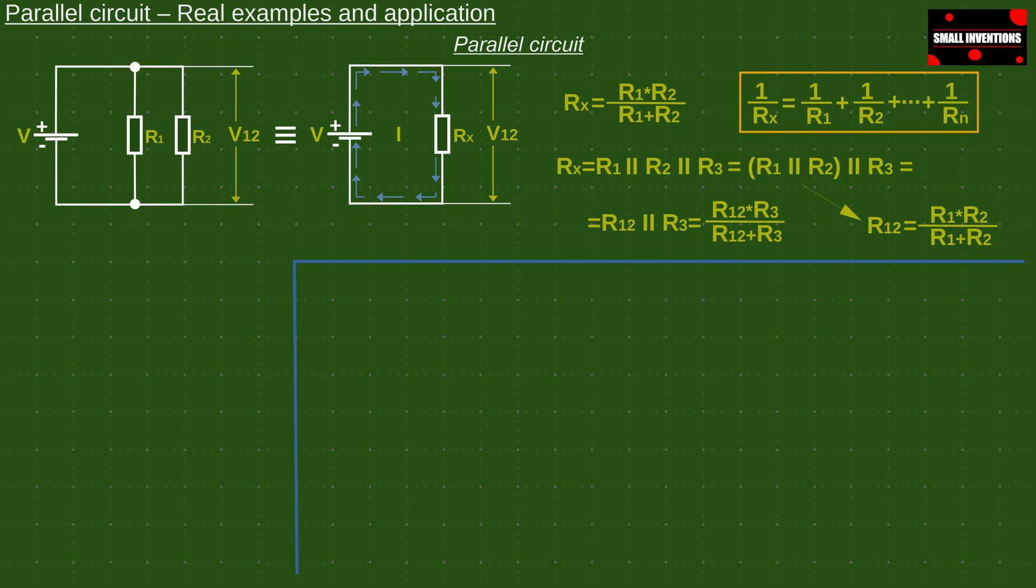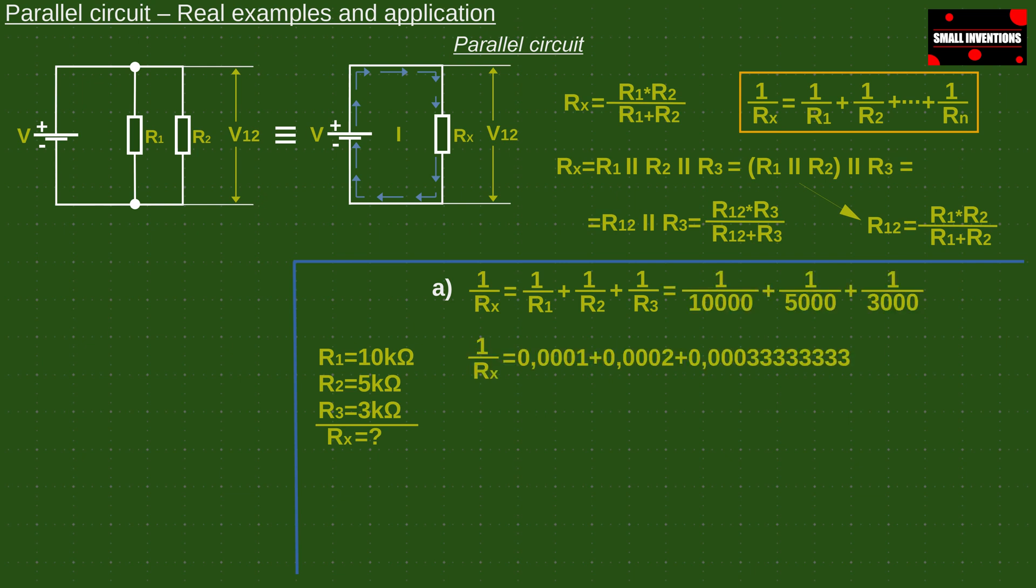Take for example that we have three resistors whose values are 10, 5, and 3 kilo ohms. For a more accurate calculation, it is better to convert kilo ohms to ohms. Then we enter these values into the equation and calculate the right side of the equation. In the end, such a simplified equation is easy to solve and we get the value of the total resistance of 1.58 kilo ohms.